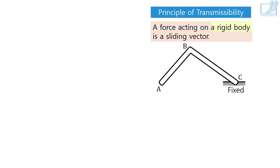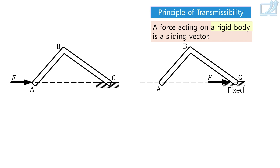Here is a bent rod ABC, fixed to the ground at point C. A force of magnitude F is applied horizontally rightwards at point A — so A is the point of application. The line of action of this force is line AC. By the principle of transmissibility, we can assume this force to be acting at point C — we can slide force F to point C. The diagram with force acting at point A and the diagram with force acting at point C are equivalent. That is the principle of transmissibility.